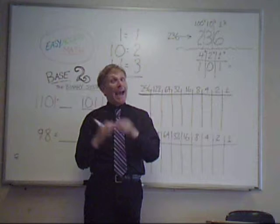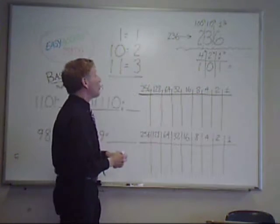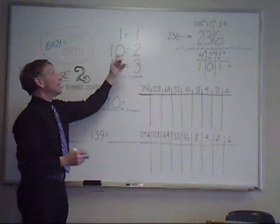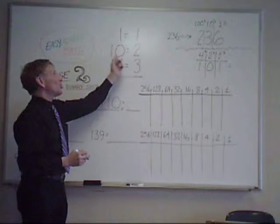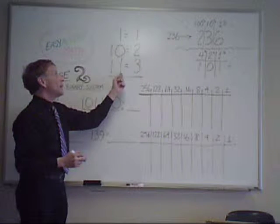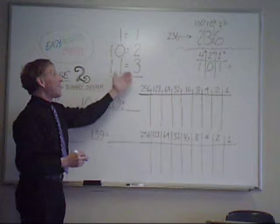But in base 2, we only have 2 digits, 0's and 1's. So, 1 is 1, but 1, 0, which looks like 10, is actually 2. And 1, 1, which looks like 11, is actually 3.